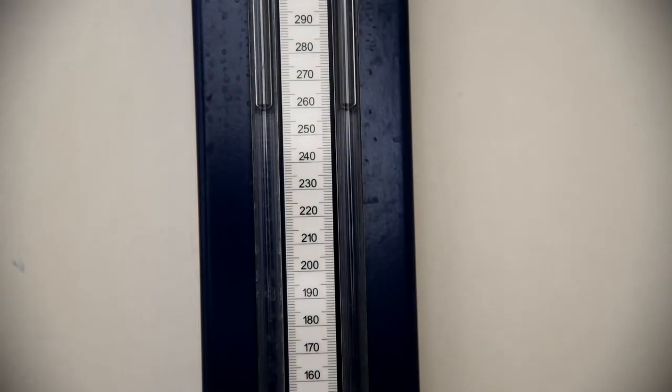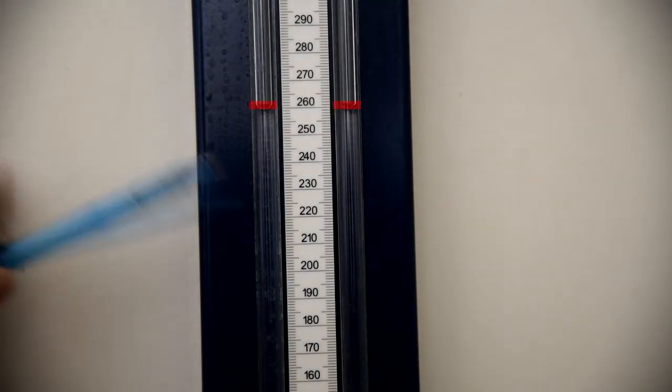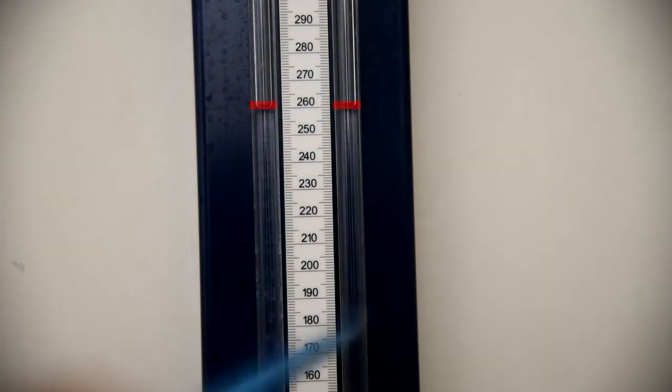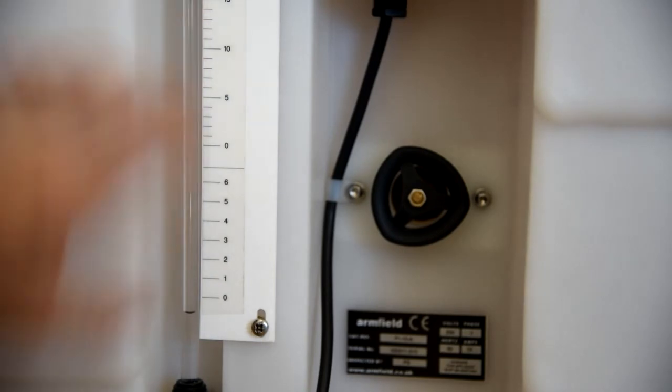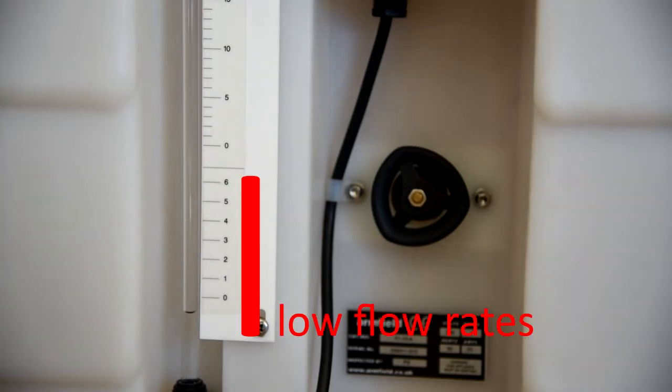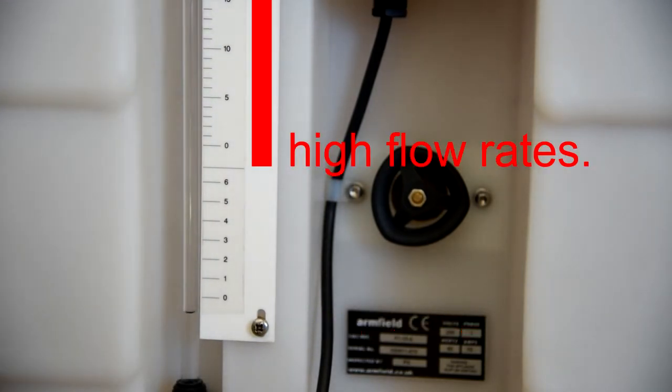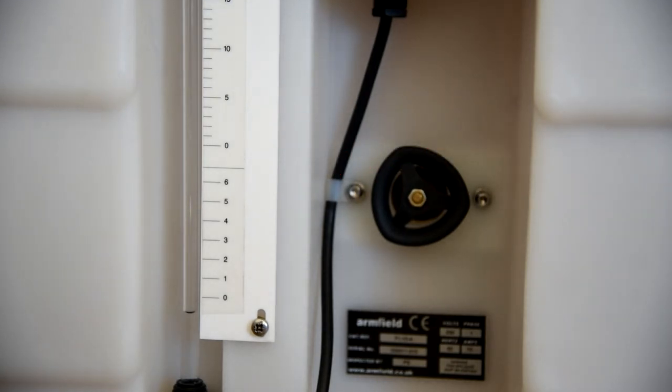Before starting measurements, you have to ensure that the levels in these manometers are the same. I want to say that this level scale consists of two parts. One is small, till 6 liters, and the second one is to 40 liters. The small part is for low flow rates, and the upper part is for big flow rates. So, let's start.